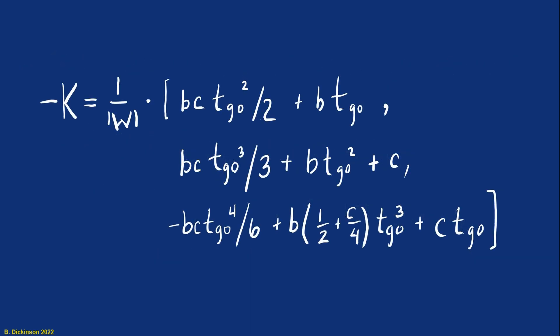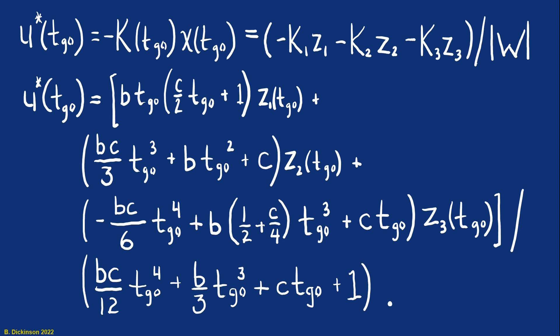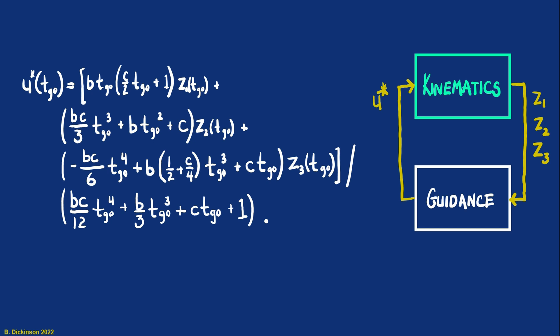And finally add in that determinant on the denominator to finally come up with our general optimal control solution for our accelerating target problem statement. That optimal control is determined in terms of the variables b and c. Those are penalties on the relative distance and relative velocity of the pursuer and target at the final time, the time to intercept. It's a state feedback law. You can see the states z1, z2, z3 fed back from the kinematics to the guidance and the guidance outputting u star. The guidance has three time varying gains in it. Those time varying gains are the coefficients in front of each of the z states divided by that determinant.